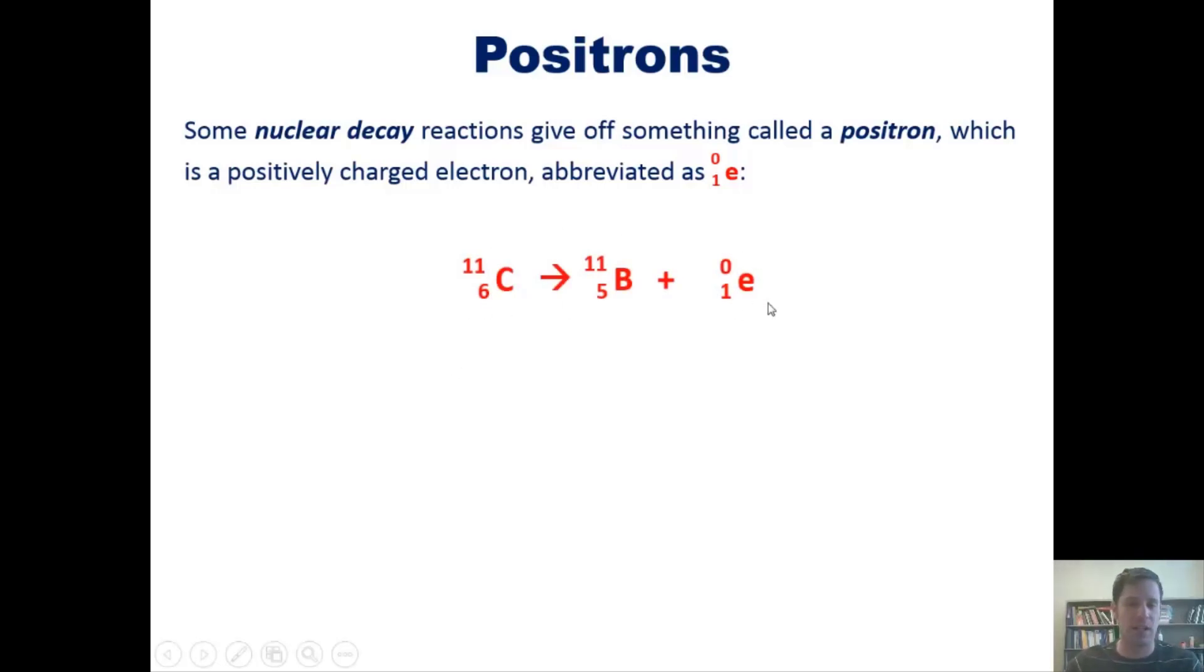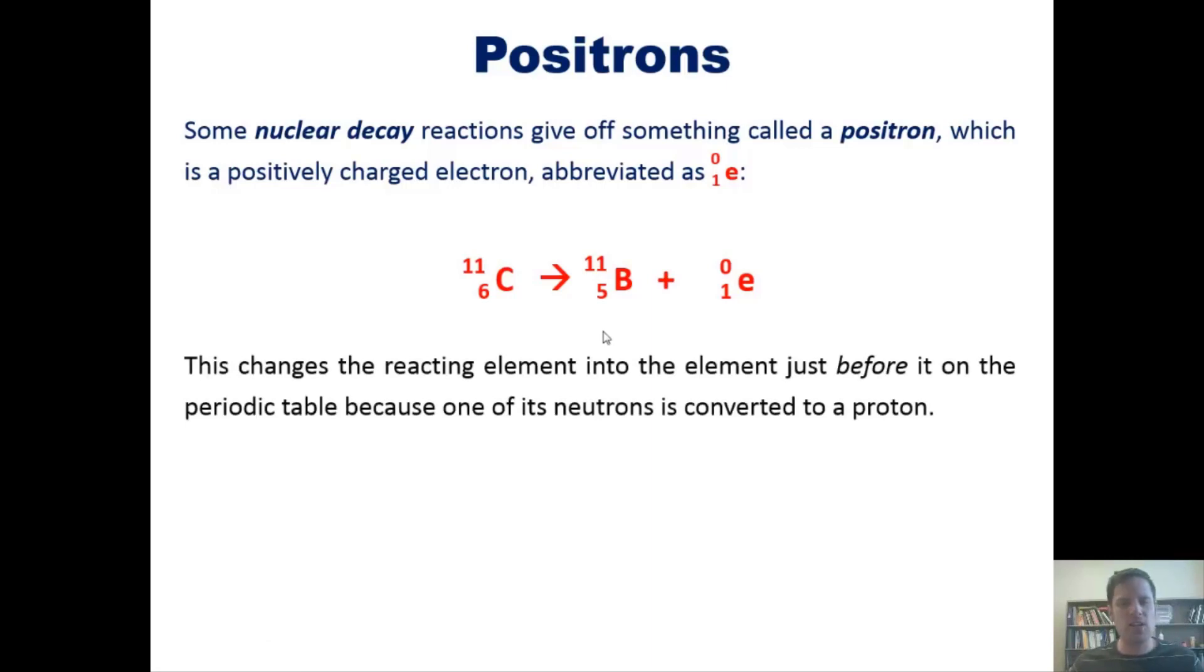We can see that mathematically in this example where carbon-11 emits a positron—a positively charged electron with a +1 in the lower left quadrant—transforming itself into boron-11. When we add the numbers, 0 plus 11 equals 11, and 1 plus 5 equals 6. This process changes the reacting element into the element just before it on the periodic table.